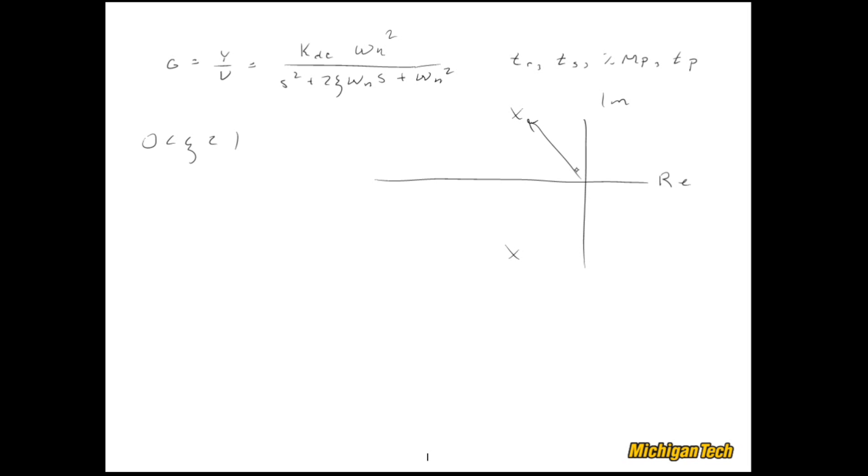This distance is omega n, this distance is omega d, the damped natural frequency, which is omega n times the square root of 1 minus zeta squared.